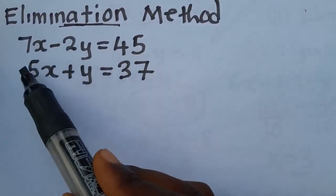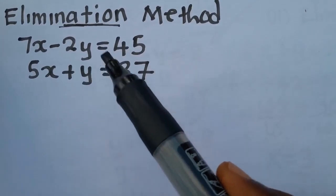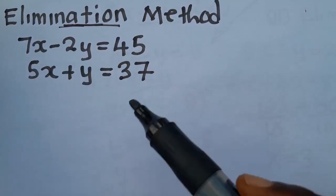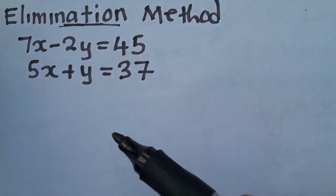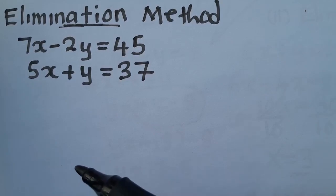The first ones or the second ones should be the same. We need to make sure that the coefficients are the same. Then we cancel out or we add or subtract such that they must give us a zero.